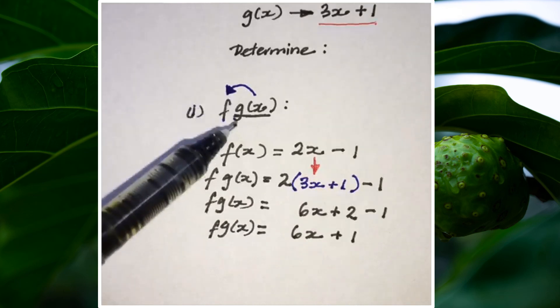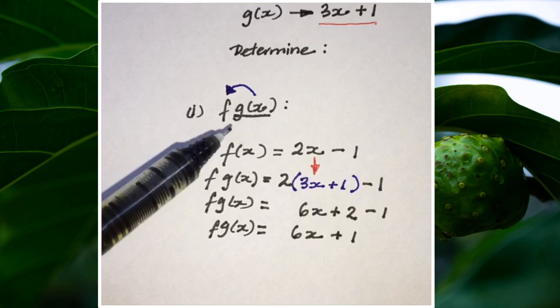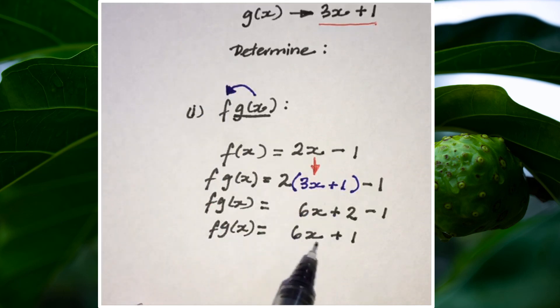So when I use the output of g(x) as an input for f(x), I end up with 6x + 1. Simple, isn't it?